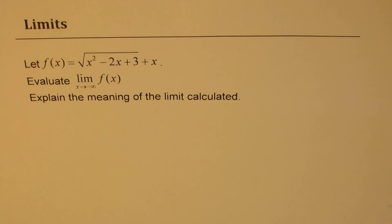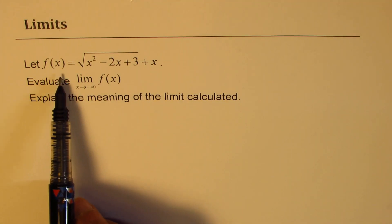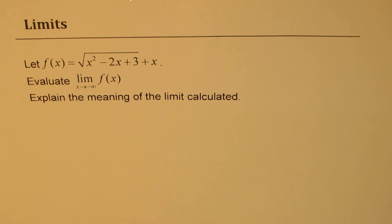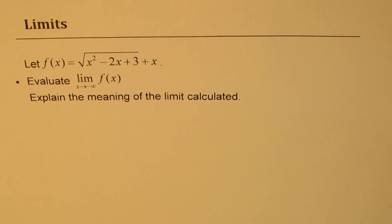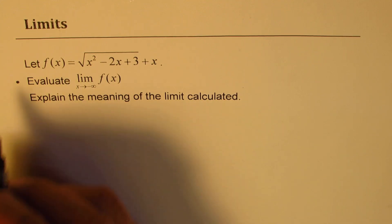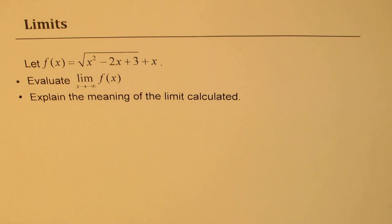I'm Anil Kumar. Let us try to understand the concept of limits when x approaches negative infinity for square root functions. The question is: let f of x equal to square root of x squared minus 2x plus 3, plus x. We need to evaluate the limit when x approaches minus infinity for the given function, and then explain the meaning of the limit calculated. You can pause the video, answer the question, and then look into my suggestions.